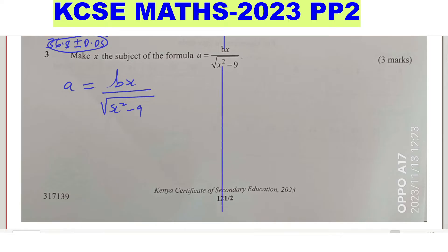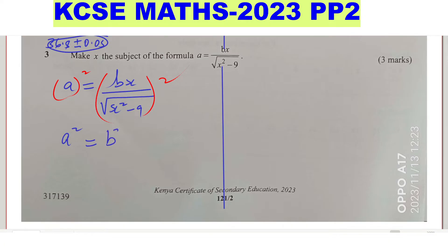The first thing you're going to do is get rid of the square root sign. To get rid of that, we are going to square both sides. This eliminates the square root sign in the denominator. So a squared equals b squared x squared divided by x squared minus 9.